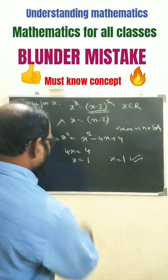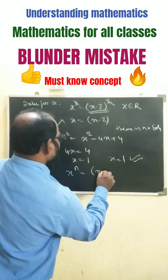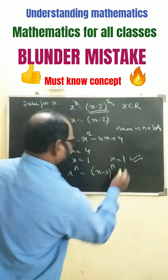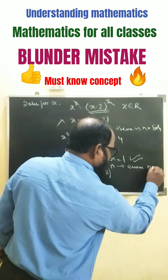So there is a trick. Whenever you get x to the power n equals to x minus 2 to the power n, here if n is an even number,